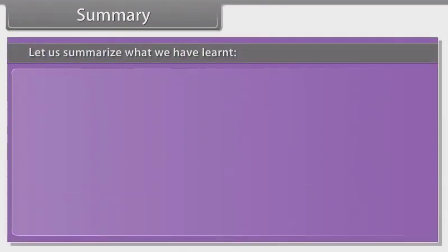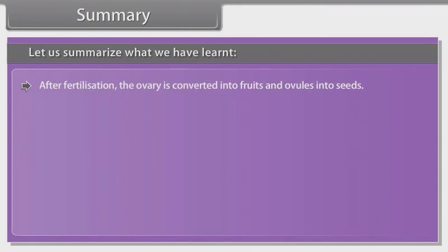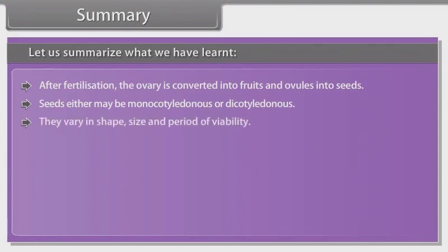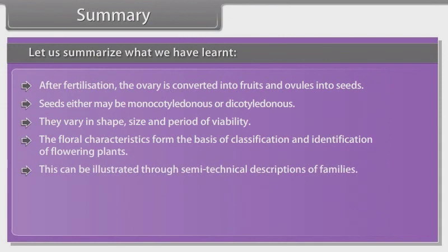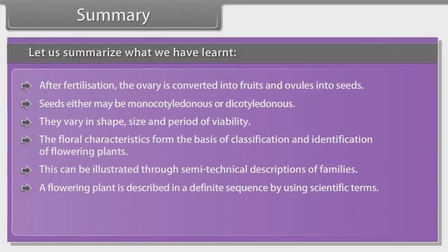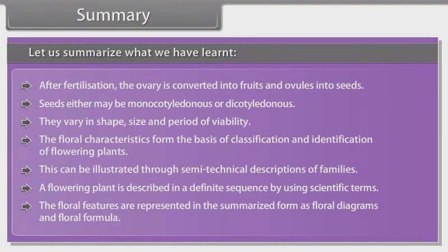Let us summarize what we have learned. After fertilization, the ovary is converted into fruits and ovules into seeds. Seeds either may be monocotyledonous or dicotyledonous; they vary in shape, size and period of viability. The floral characteristics form the basis of classification and identification of flowering plants. This can be illustrated through semi-technical descriptions of families. A flowering plant is described in a definite sequence using scientific terms. The floral features are represented in summarized form as floral diagrams and floral formulae.